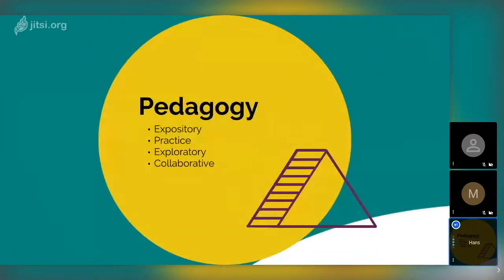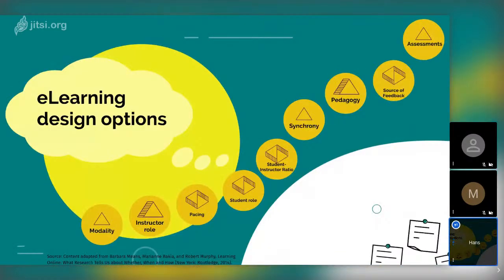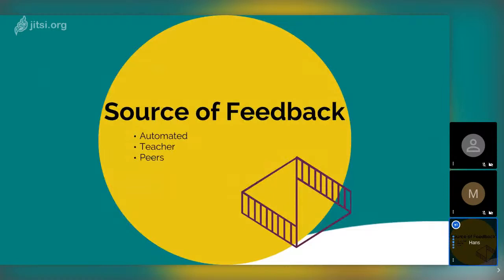Then there's the pedagogy you use — being expository, doing a lot of practice, letting students explore things more, or being collaborative. It's very much related to the learner role. And what kind of feedback are you going to give? Fully automated — which works for physical equations, mathematics, or black and white answers — or manual grading by a teacher, which is more work but often necessary. You can also do peer review where students mark each other and report on that or present in a live session.